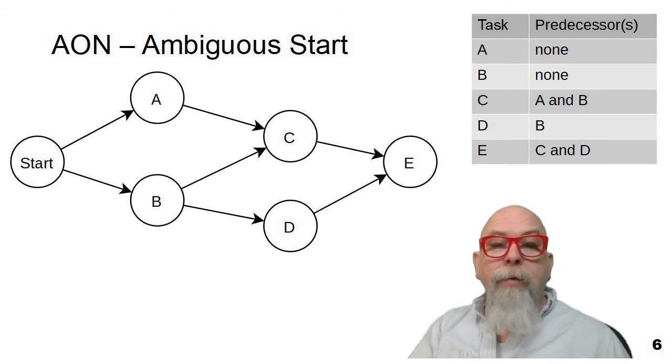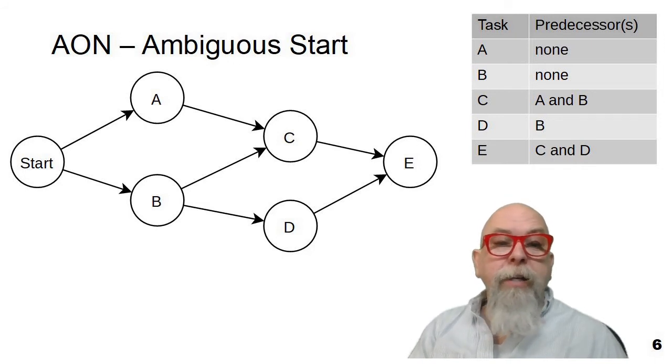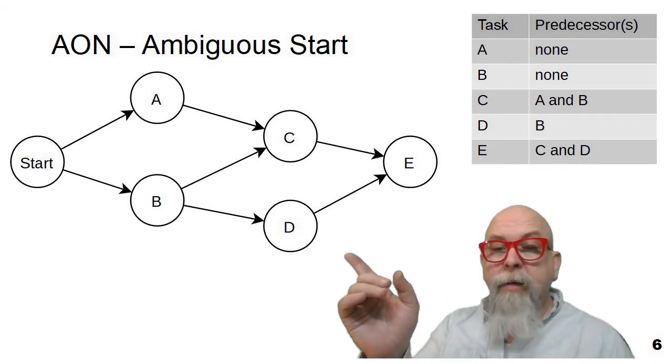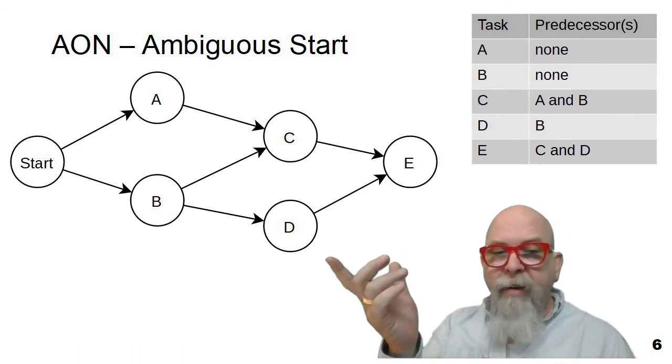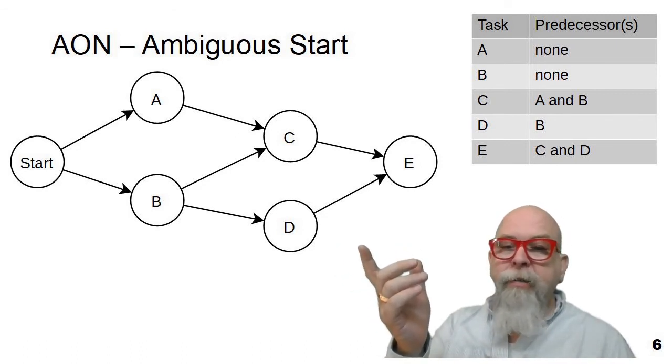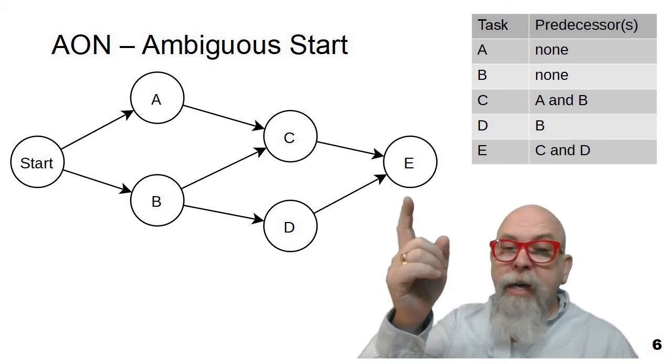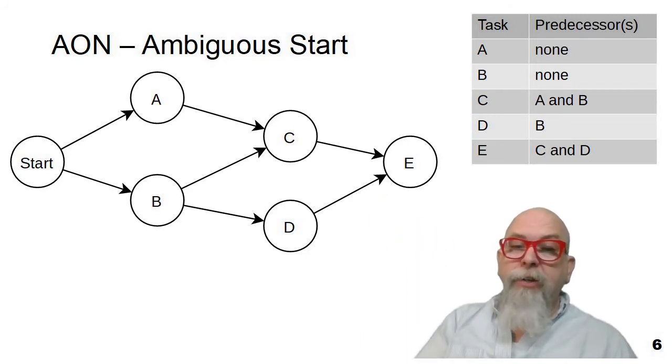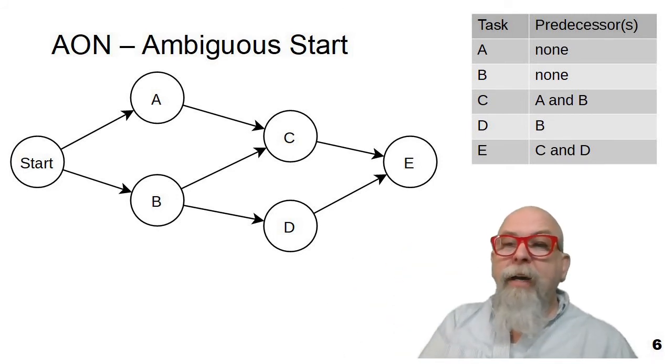Let's look that C has a prerequisite of A and B, and you can see that you've got to finish A and B to be able to get to C. You see that D has a prerequisite of B, so we don't even have to have started A. We could do B, D first before we jump up to A, C if we wanted. But you can't start C until both A and B are finished, and you can't start E until C and D are finished. So E is dependent upon literally all of the tasks, because C is dependent upon A and B, D is dependent upon B, and E is dependent upon C and D. And you can see how that works in this activity on node network diagram with an ambiguous start.